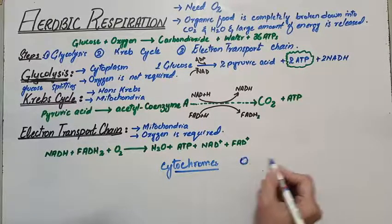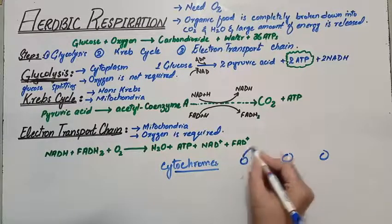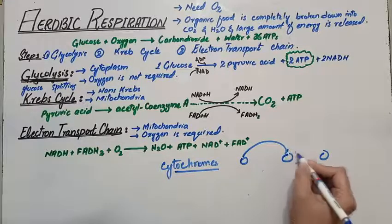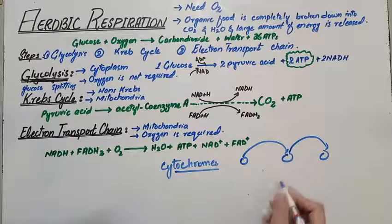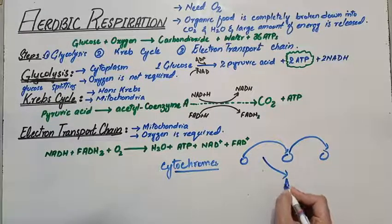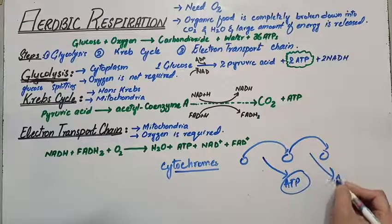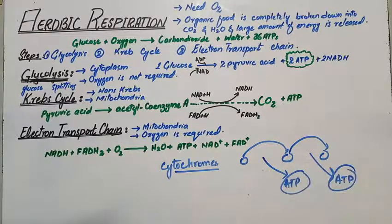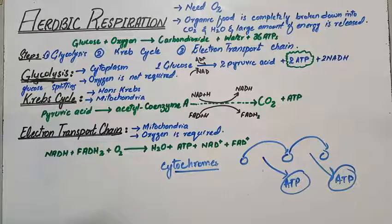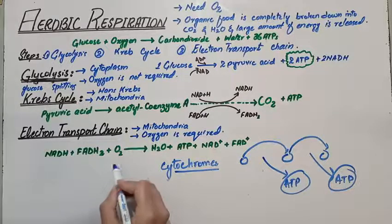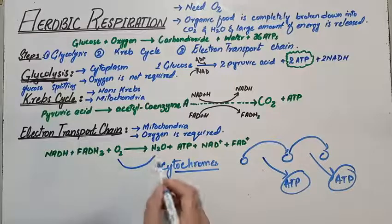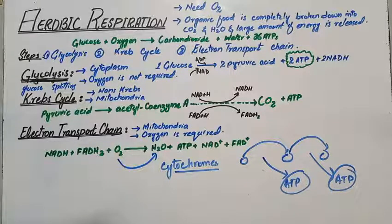In the electron transport chain, electrons pass through different cytochrome carriers and release energy at each step. This released energy is used to combine ADP and inorganic phosphate to form ATP — adenosine triphosphate. At the end, the hydrogen released from the reactions combines with the oxygen molecule to form water.